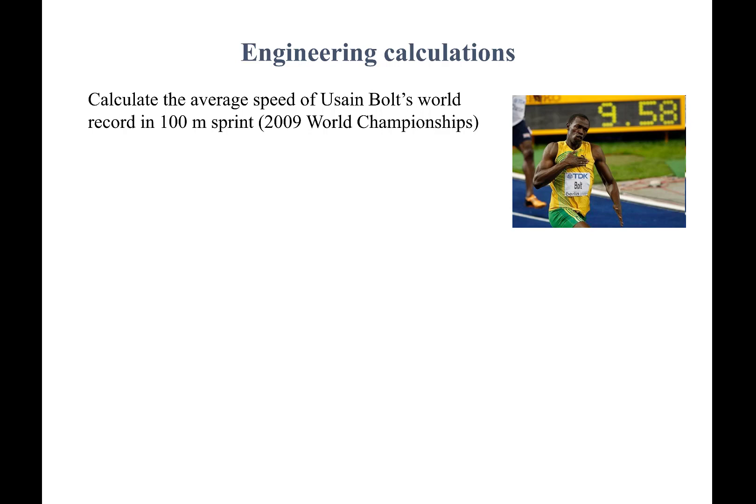In a previous video we talked about five different attributes of engineering quantities: their names or symbols, values, dimensions, units, and significant digits. We've talked about the first four before. Let's talk about significant digits and how they relate to engineering calculations. To motivate that discussion, let me present a very simple example.